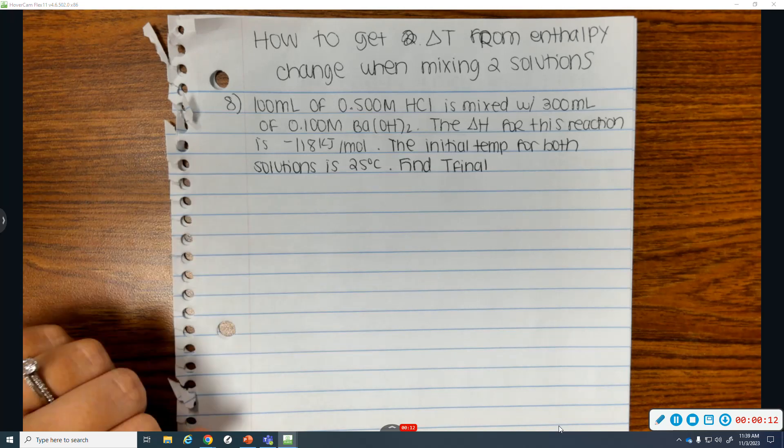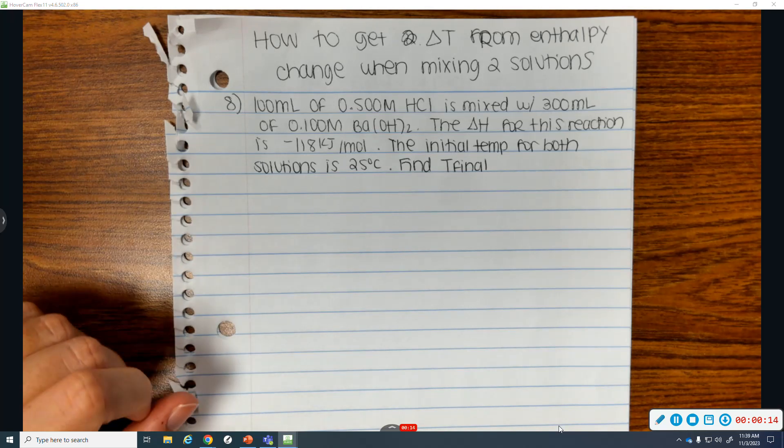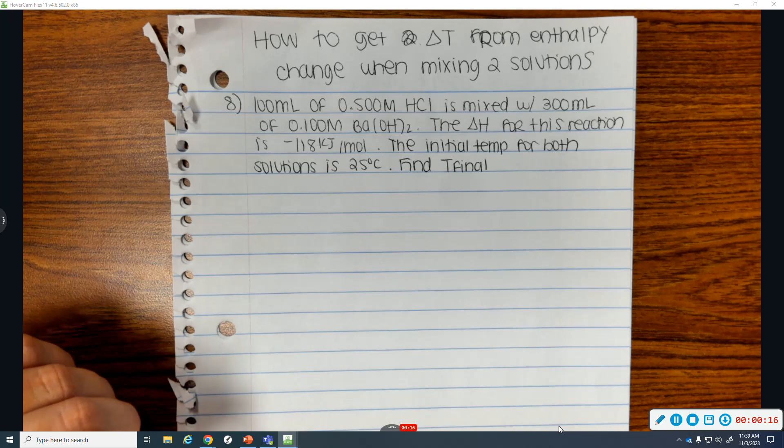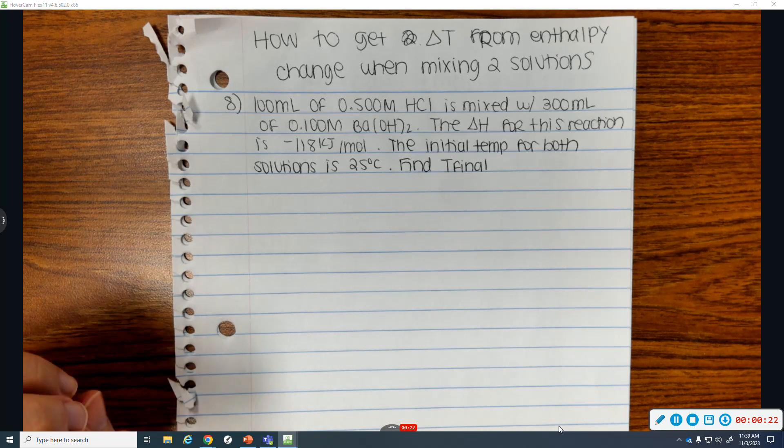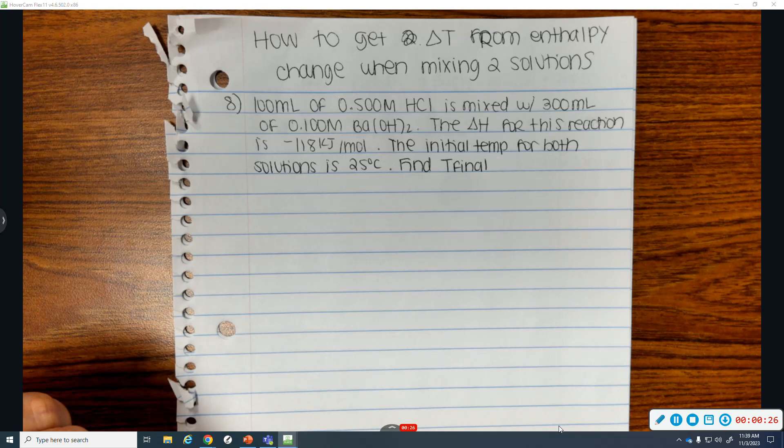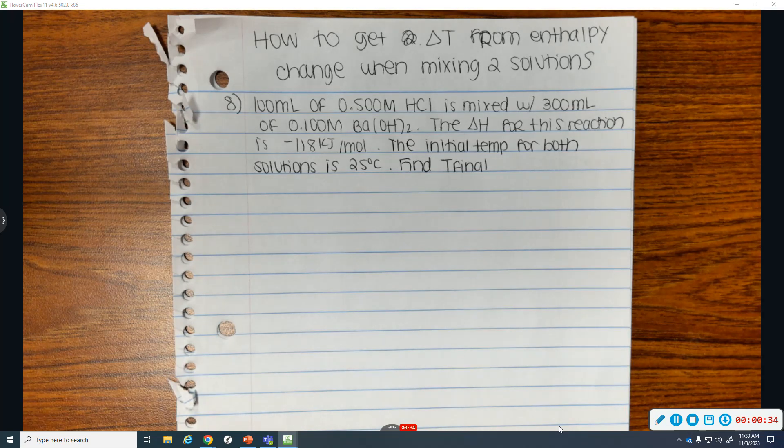So, an example problem would be something like this. 100 milliliters of 0.5 molarity HCl is mixed to 300 milliliters of 0.1 M barium hydroxide. The enthalpy change, delta H for the reaction, is negative 118 kilojoules per mole. Initial temps of both solutions are 25 degrees Celsius. Find the final temperature.